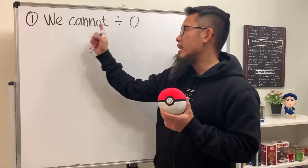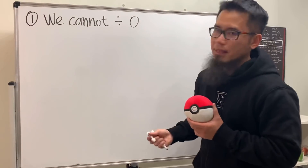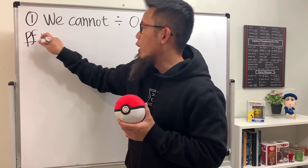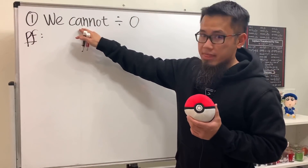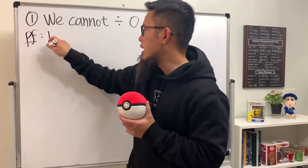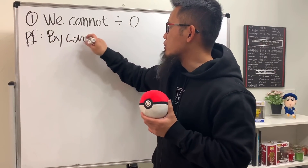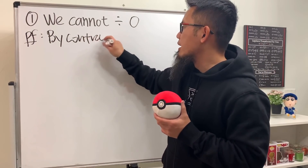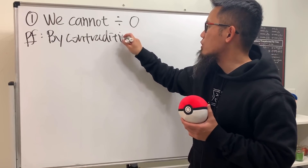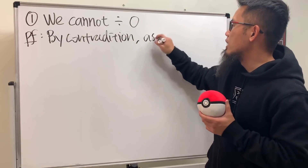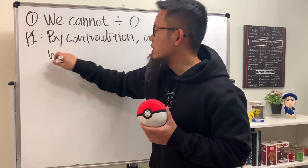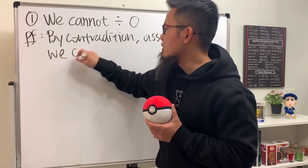The first statement is: we cannot divide by zero. Because we have the word 'cannot,' it's a good idea to use contradiction. By contradiction, we assume that we can actually divide by zero.